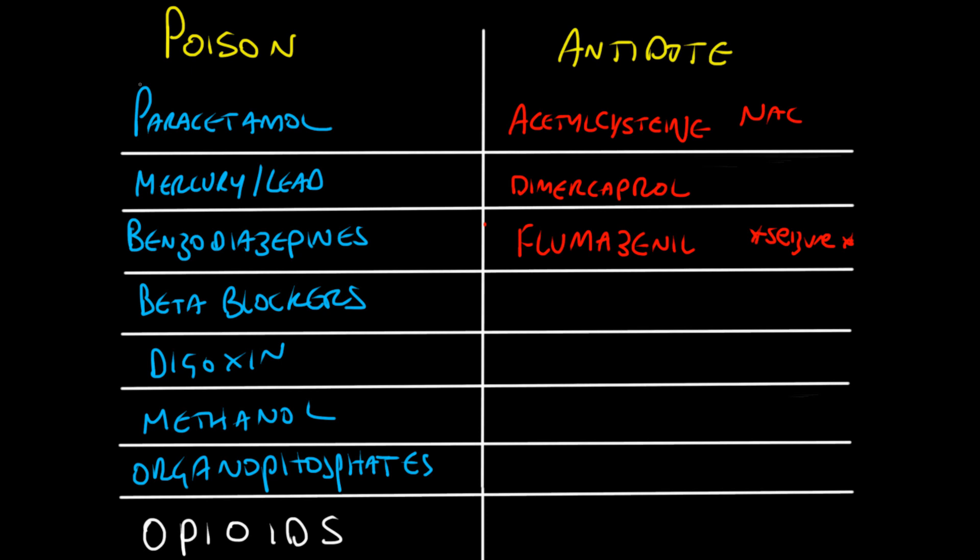For beta blocker overdose and calcium channel blockers, you would give glucagon. You have to give quite large doses, so you may need to make up a glucagon infusion. In late stages you can also use a 20% lipid emulsion — basically fat in solution — to absorb the drug present in the serum so it can't act at the receptor site.